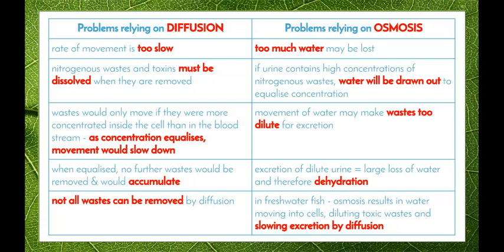What about the problems of relying on osmosis? Too much water may be lost — if the urine contains high concentrations of nitrogenous wastes, water will automatically be drawn out to help equalise the concentration. Movement of water may make wastes too dilute for excretion. Excretion of dilute urine leads to large losses of water and therefore dehydration. In freshwater fish, osmosis results in water moving into cells, diluting toxic wastes and slowing excretion by diffusion.